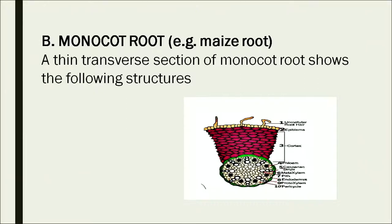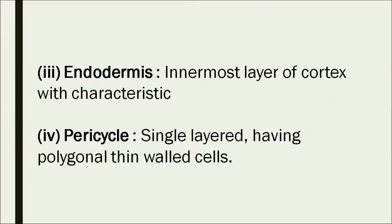In the monocot root diagram: number 8 is the endodermis, number 9 is the protoxylem, and number 10 is the pericycle.